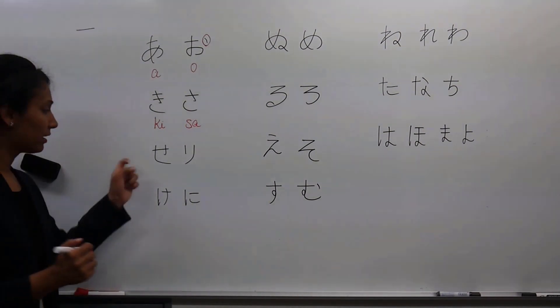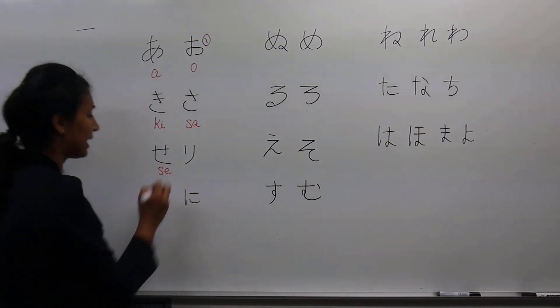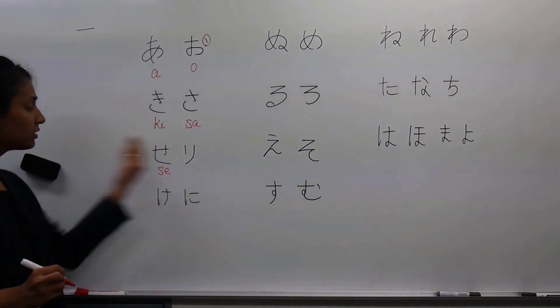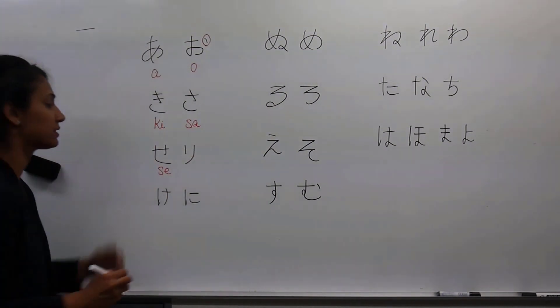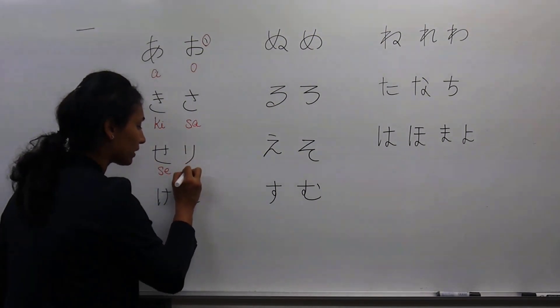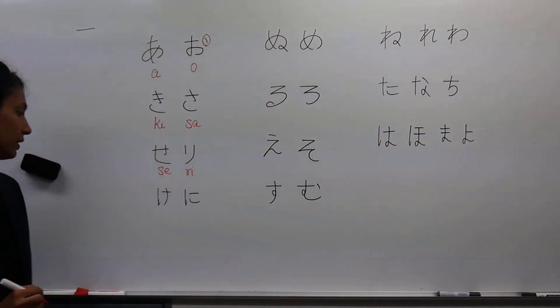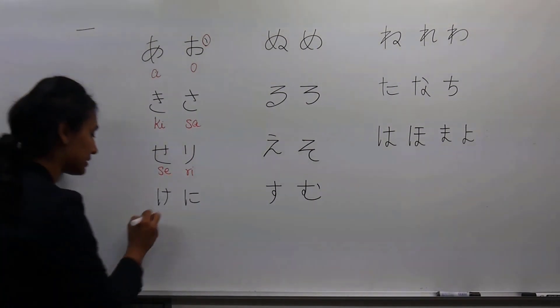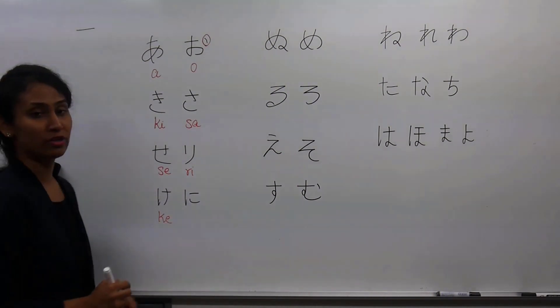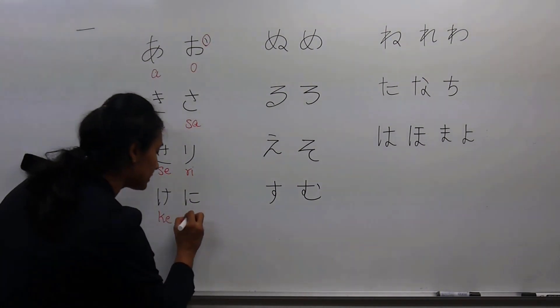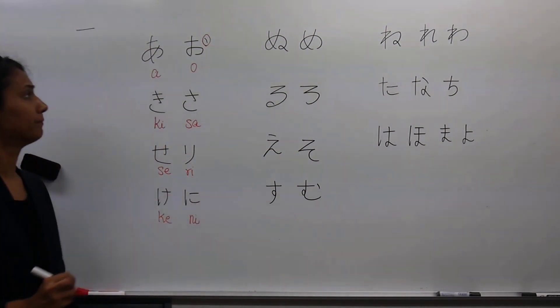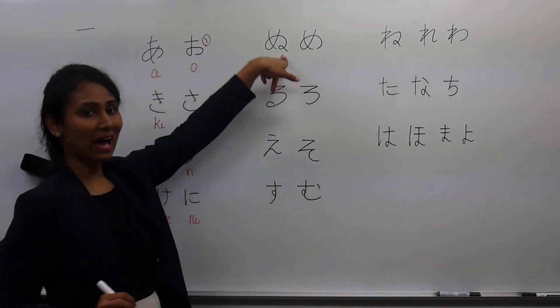This one looks like the Hindi 'a.' This word is 'se,' and if this turns towards the opposite side without the line, it becomes 're.' This one is 'ki.' 'L' and 'T' talking to each other, and this one is 'me.'